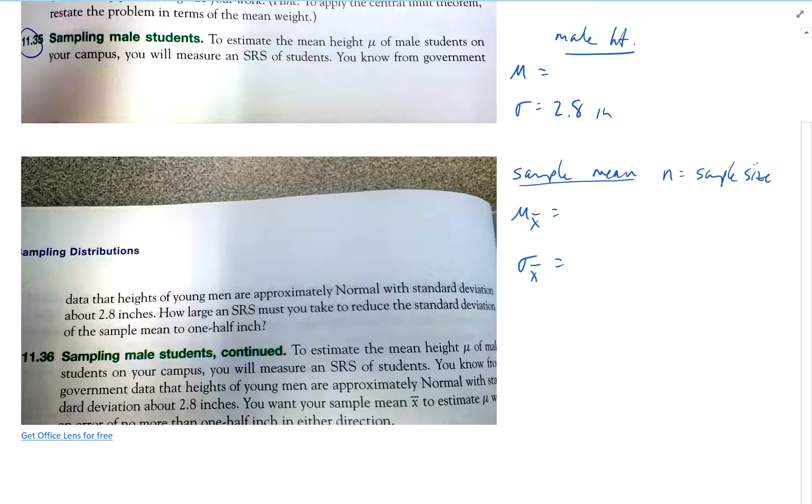So if I take a sample size of 10, then sigma sub x bar would be 2.8 divided by the square root of 10. If I took a sample size of 30, it would be 2.8 over the square root of 30. Now they're asking us, what is it?